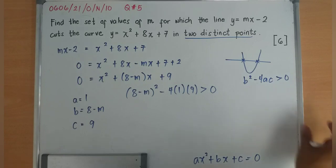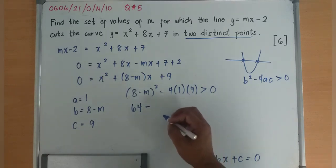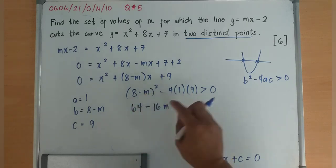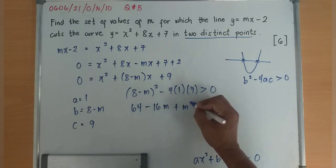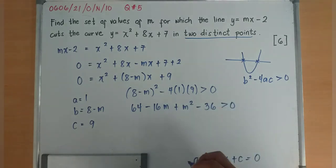Now, since I have that, I'll expand this first. I'll have 64 - 16m. Why 16m? 2 times 8 is 16 times negative m is negative 16m plus m² minus 4 times 9 is 36, negative 36 is greater than 0.